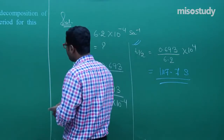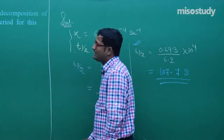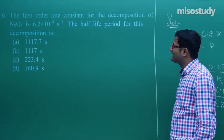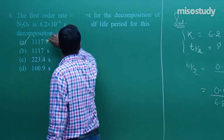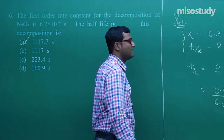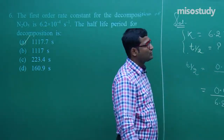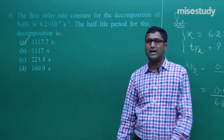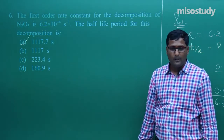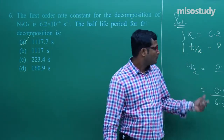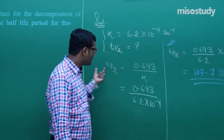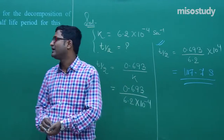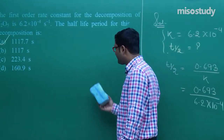For question number 6, A is the correct option. This is the detailed solution related to chemical kinetics. As I told you, in chemical kinetics the maximum questions are calculation-based. We have to check each and every step of the calculation carefully.